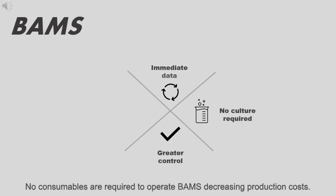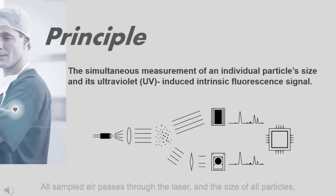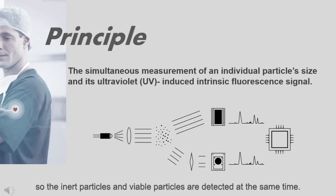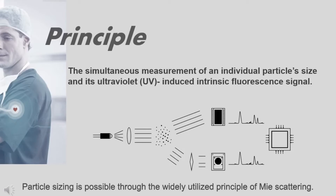No consumables are required to operate BAMS, decreasing production costs. All sampled air passes through the laser, where the size of all particles, both inert and viable, is measured. BAMS detects size and fluorescence simultaneously, so inert and viable particles are detected at the same time. Particle sizing is possible through the widely utilized principle of Mie scattering.